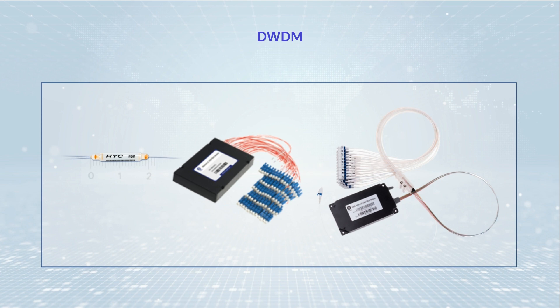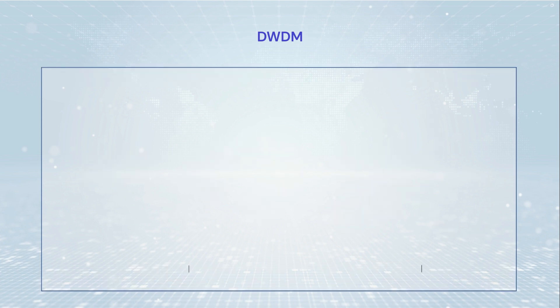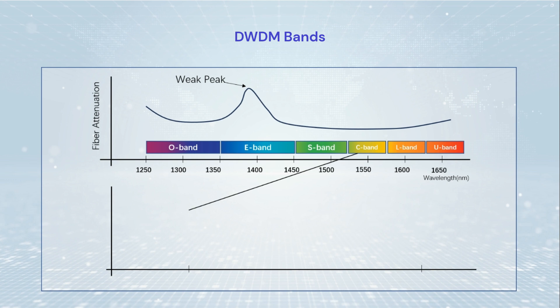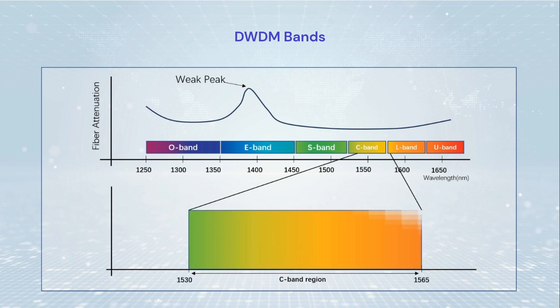DWDM is dense wavelength division multiplexing. DWDM's wavelengths are located within the narrow 1525 nanometers to 1565 nanometers region known as the C-band, and are being expanded into the 1570 to 1610 nanometers L-band spectrum.